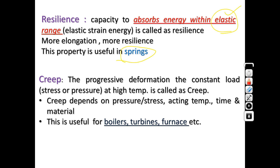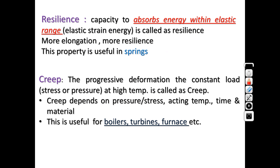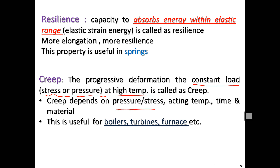The last property is creep. Creep is the progressive deformation at constant load at high temperature. The constant load may be stress, pressure, or force. This property is called creep, and it is useful in applications such as boilers, turbines, and furnaces. Creep depends on load, temperature, material properties, and time — it is a time-dependent property.